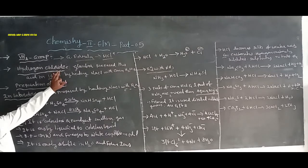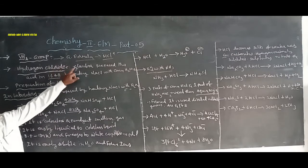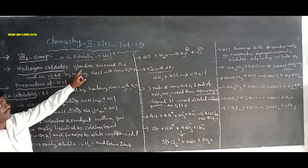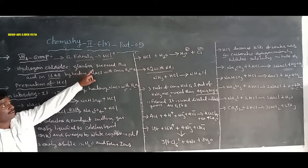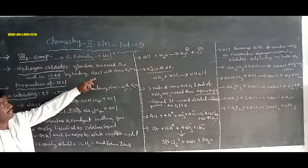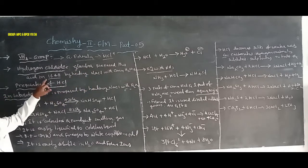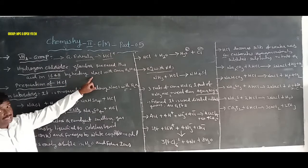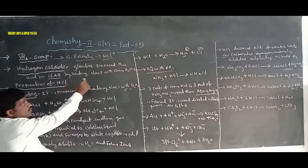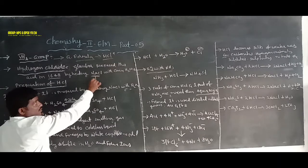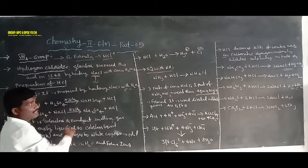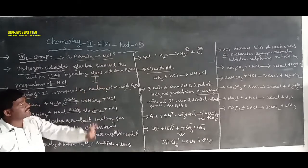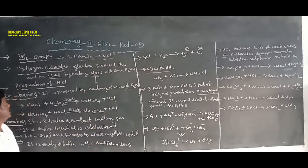The first scientist, Glauber, prepared hydrochloric acid in 1648 by heating common salt, that is also known as sodium chloride, with concentrated sulfuric acid.